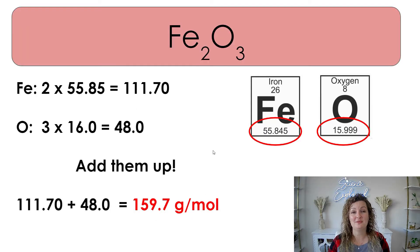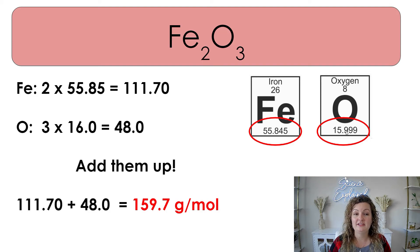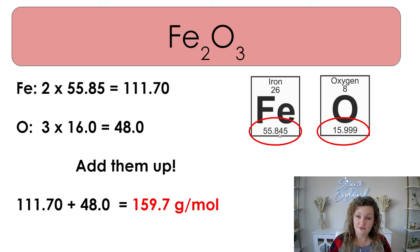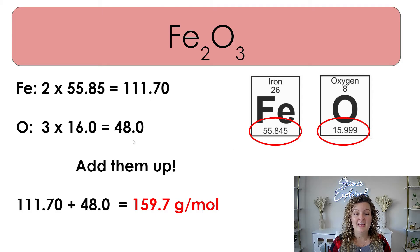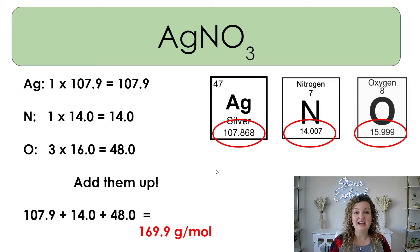Here's the first compound, Fe₂O₃. You can see we've located them on the periodic table. We have two Fe, multiply that by 55.85, and then we have three oxygen, multiply that by 16. Add them up and we get 159.7 grams per mole.